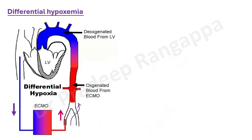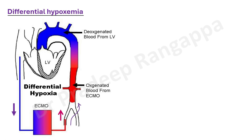When we talk about differential hypoxemia, one key thing to understand is this happens when the heart is recovering. Initially with our 39-year-old, we wouldn't have differential hypoxemia. It sets in when the heart starts recovering and ejecting blood while the lung is dysfunctional — due to pulmonary edema, ARDS, or other reasons. Deoxygenated blood is being ejected, creating a mixing cloud between the pure oxygenated ECMO blood flowing retrograde and the deoxygenated blood ejected by the recovering heart.